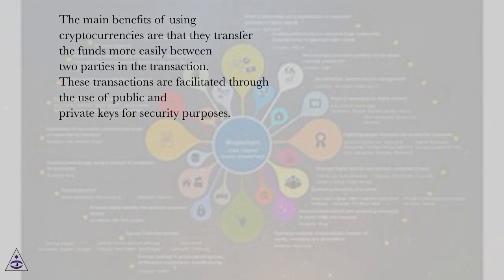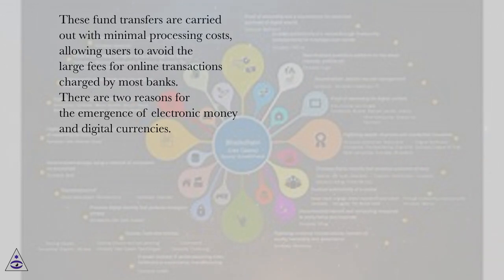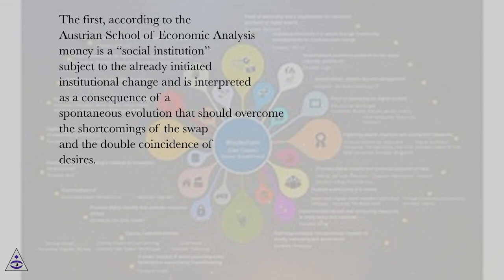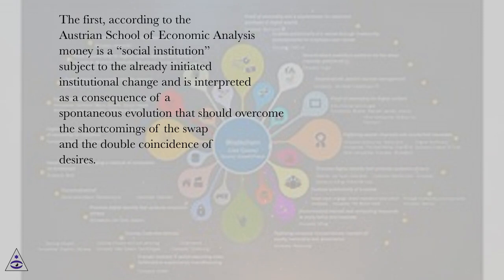Cryptocurrencies have their own advantages and disadvantages. The main benefits are that they transfer funds more easily between two parties in a transaction. These transactions are facilitated through the use of public and private keys for security purposes. Fund transfers are carried out with minimal processing costs, allowing users to avoid the large fees for online transactions charged by most banks. There are two reasons for the emergence of electronic money and digital currencies. The first, according to the Austrian School of Economic Analysis, is that money is a social institution subject to institutional change.